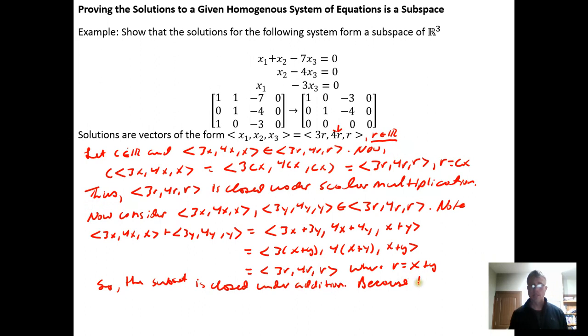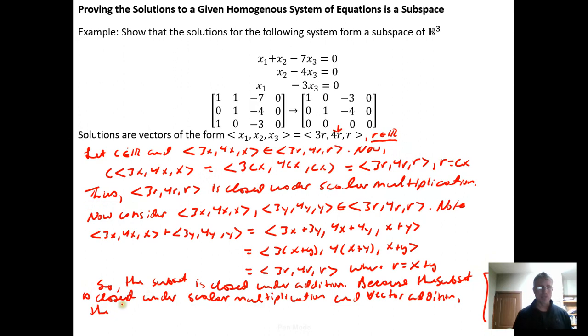Because the subset is closed under scalar multiplication and vector addition, the subset is a subspace of R3. And it's a subspace of R3 because this is clearly a subset of R3, all vectors with three components.